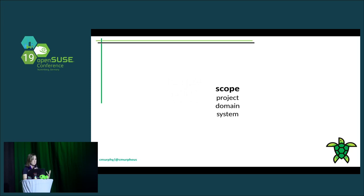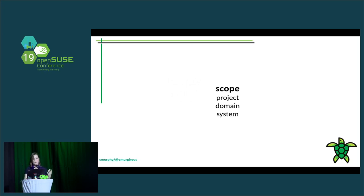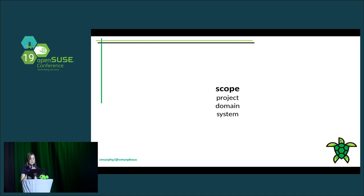A domain is sort of like a top-level project, but it also allows you to have users and projects within the domain so that users can be self-organized — they can create their own users and their own projects. The system scope is a relatively new scope we've just created. It's the scope you'd use if you actually don't want a multi-tenant operation, but want to manage something global across the entire cloud or hidden from tenant users, like managing your compute hypervisors or managing your Keystone catalog.